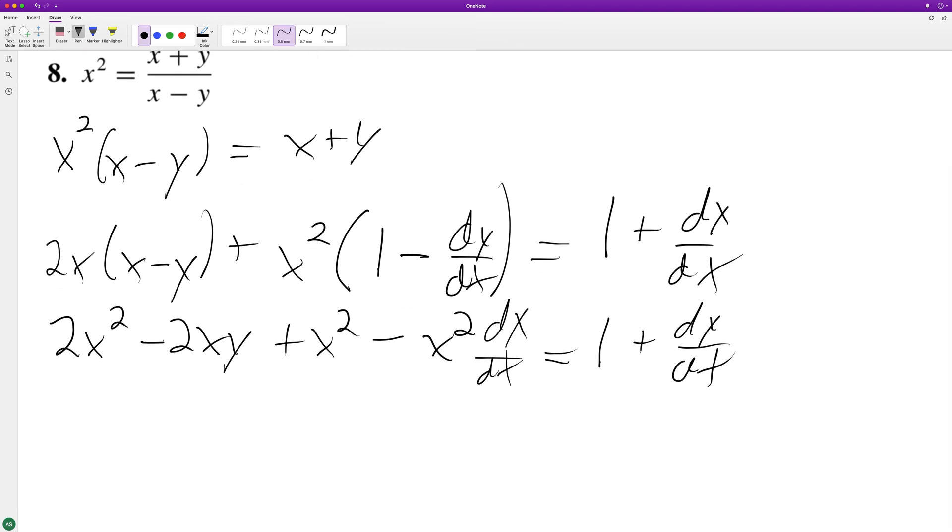All right, so what we're going to get here is... I'm writing the right-hand side first. dy/dx, and then we'll have plus x squared dy/dx is equal to 2x squared minus 2xy plus x squared minus 1.